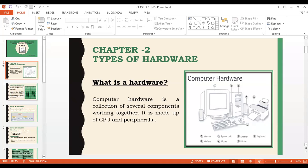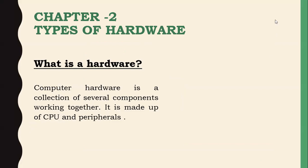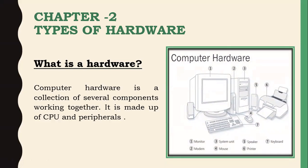Chapter two covers types of hardware. Hardware refers to the physical components of a computer that we can see and touch. It is a collection of several components working together, made up of the CPU and all peripherals, which include input devices, output devices, and storage devices. All of these together form the hardware. For example, the CPU and the printer are physical components, so they are hardware.